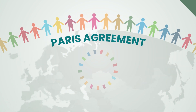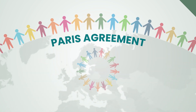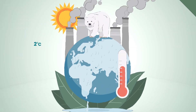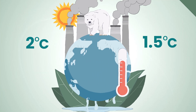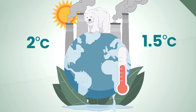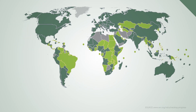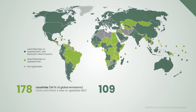The Paris Agreement is an international treaty aimed at limiting global mean temperature increases to well below 2 degrees, ideally to 1.5 degrees compared to pre-industrial levels. Central to this goal is the concept of common but differentiated responsibilities, where each country defines its own path through Nationally Determined Contributions, or NDCs.